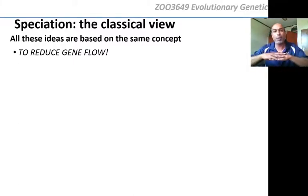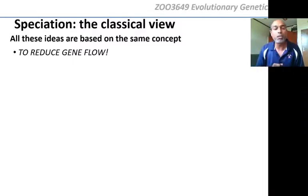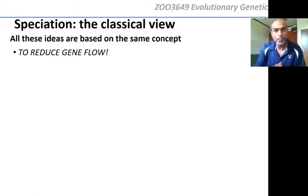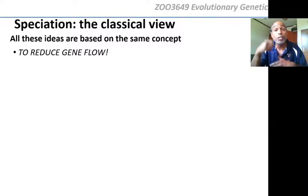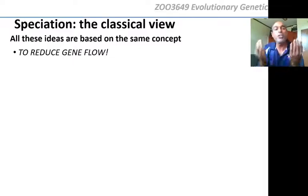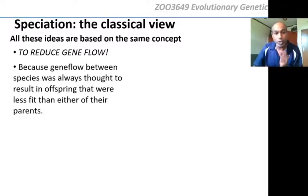All of these classical views — whether allopatric, parapatric, sympatric, or peripatric — are based on the same concept: gene flow must be reduced. There can be no genetic exchange, because as soon as there's genetic exchange, you don't get speciation — the populations become the same. For speciation, we want populations to become different. So they must be isolated somehow, even if they are completely geographically overlapping.